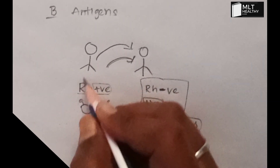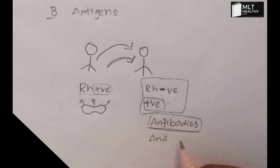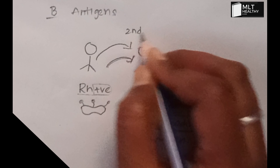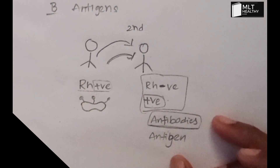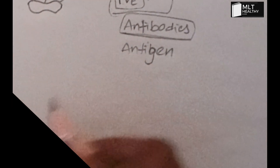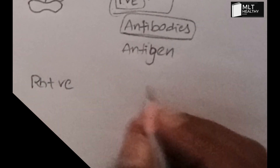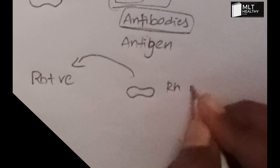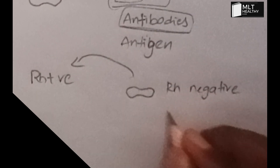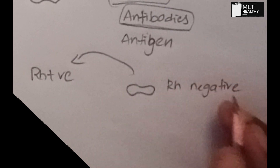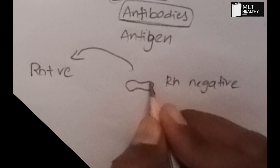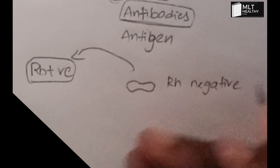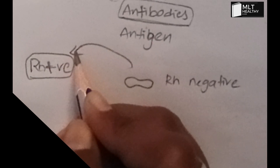This Rh-positive antigen triggers an immune response. Antibodies are produced against the Rh-positive antigen. If Rh-positive blood is given a second time to that Rh-negative person, the already-formed antibodies will react with the Rh-positive antigens, causing a severe reaction and damage to the blood cells. This is the risk of a second transfusion.